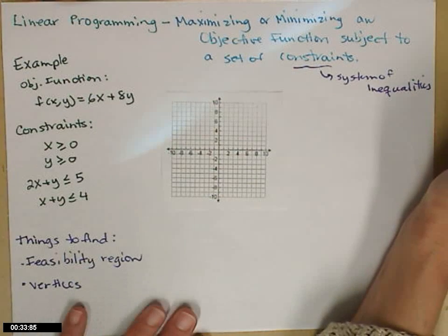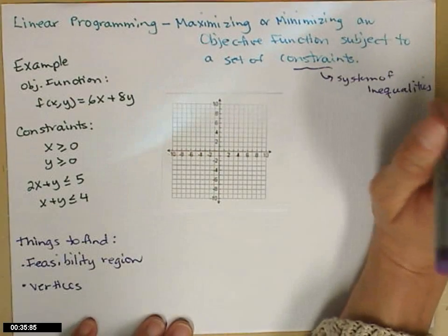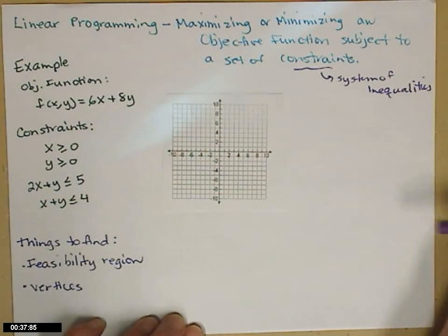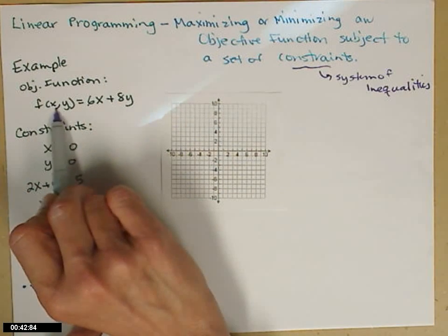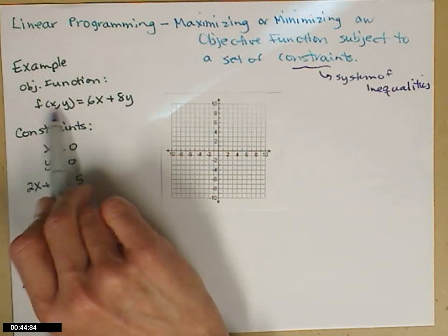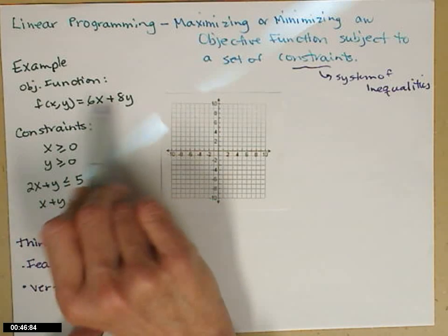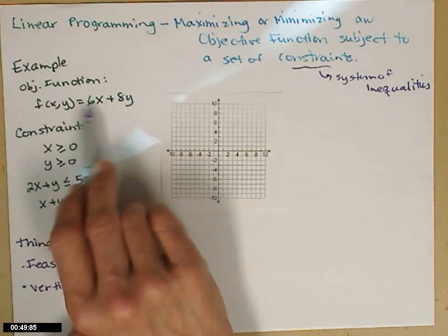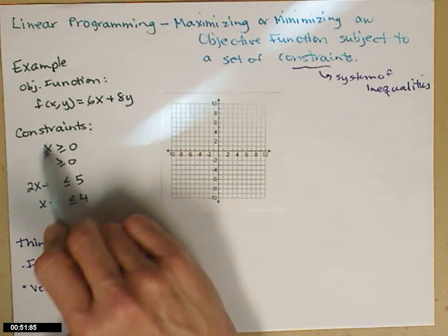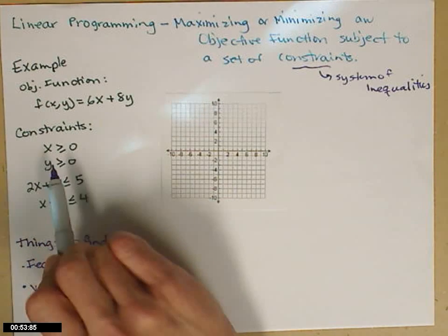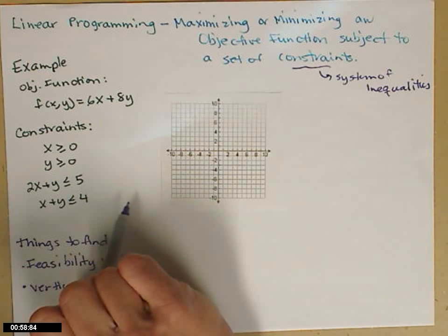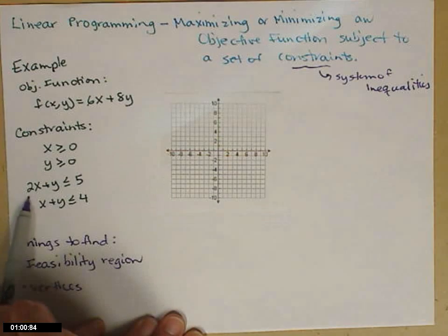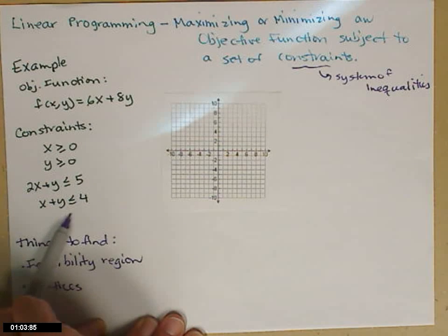Sometimes you'll have to come up with those constraints, and sometimes they'll be given. In this case, they're just given. So here are my constraints and here's the objective function. Don't freak out about the notation — this is just telling us that I have two letters to plug in, so I have to give it two numbers, and they go in order. I have four constraints: x ≥ 0, y ≥ 0, 2x + y ≤ 5, and x + y ≤ 4.